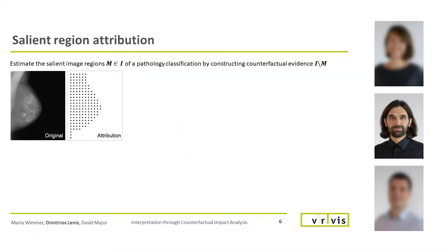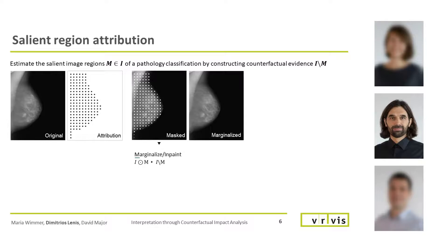The basic idea is to derive a healthy counterpart to a pathology depicting medical image. Intuitively, the difference between these two shows the salient regions. This can be found iteratively. The key step is the valid marginalization of attributed regions — altering those regions so that they no longer influence the classification. Resulting regions must therefore depict healthy tissue.